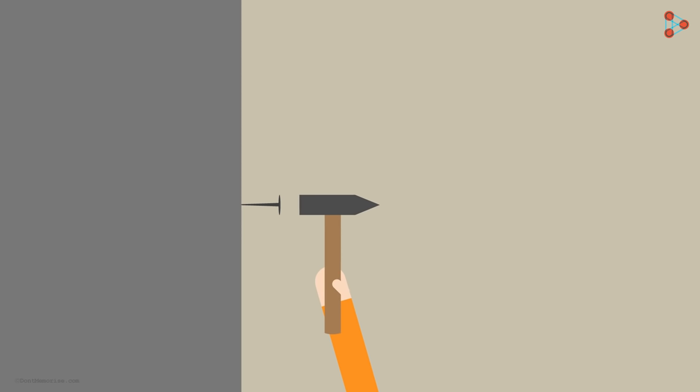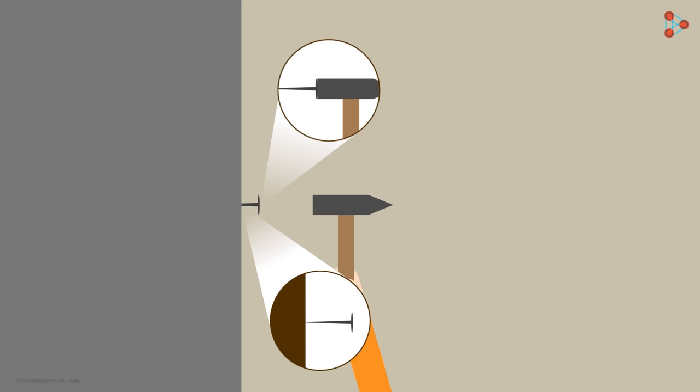When you hammer an iron nail, you apply force on the flat side of the nail. The pointed side of the nail which is in contact with the wall then applies the force on the wall and tries to pierce it.